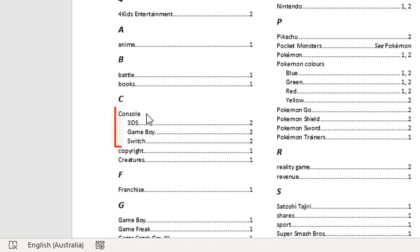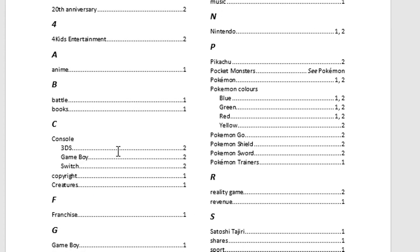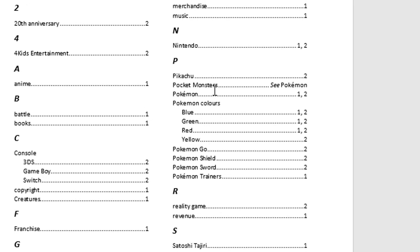So like down here, we have console with three sub-entries under the main entry. Over here, next to Pocket Monsters, it says 'see Pokémon,' because they're basically referring to the same thing. So if somebody is searching for Pocket Monsters, you can just collect it all under the same heading of Pokémon — it's the same thing.